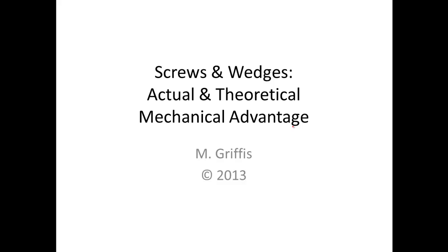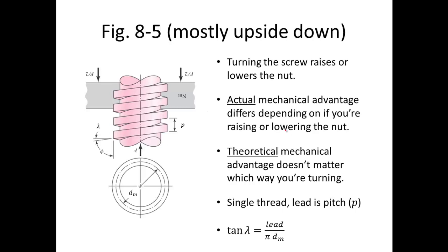Today I'd like to talk about screws and wedges — specifically the actual and theoretical mechanical advantage of these simple machines. Here we have figure 8-5, mostly upside down. The force that the nut sees is our output force, and the torque of the screw is our input torque. Turning the screw raises or lowers the nut. The actual mechanical advantage differs depending on whether you're raising or lowering the nut, while the theoretical mechanical advantage doesn't depend on direction.